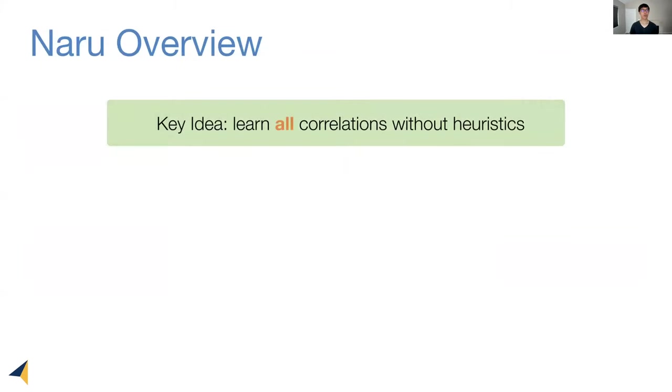Our solution is called Naru, Neural Relation Understanding. Naru uses the key idea that we can, in fact, learn all correlations across columns without heuristics. Here's how it works.